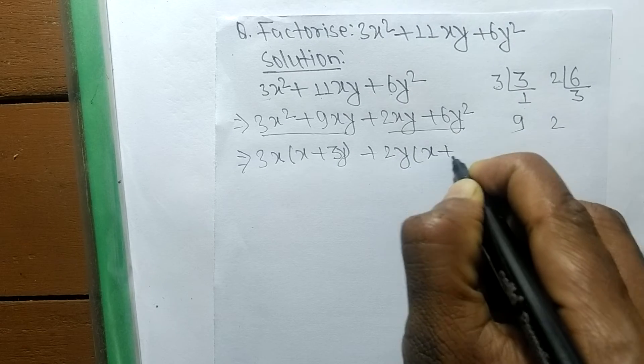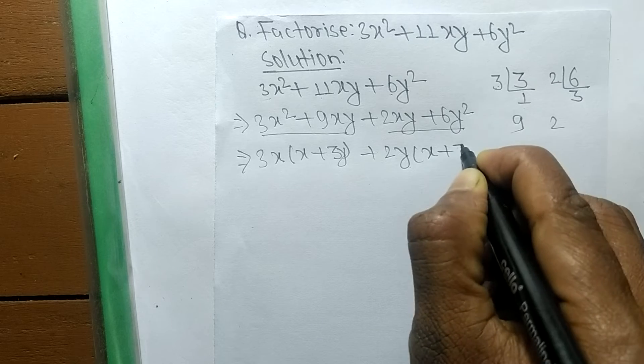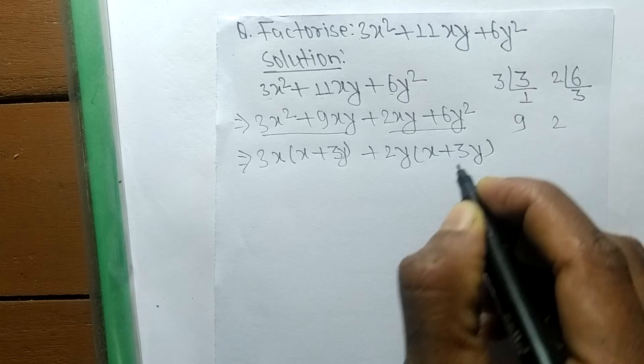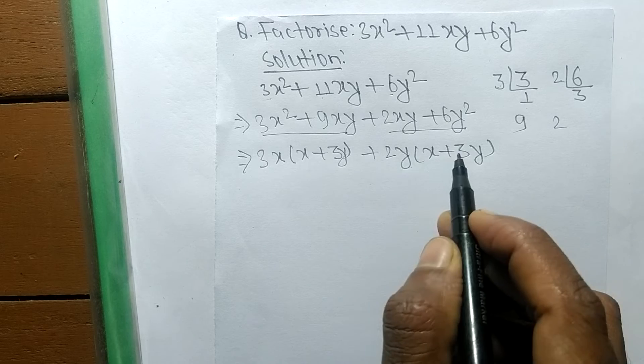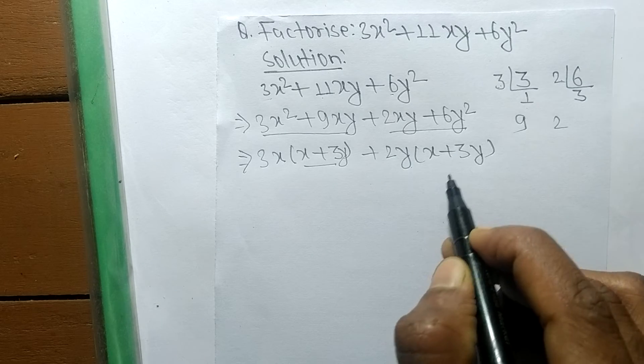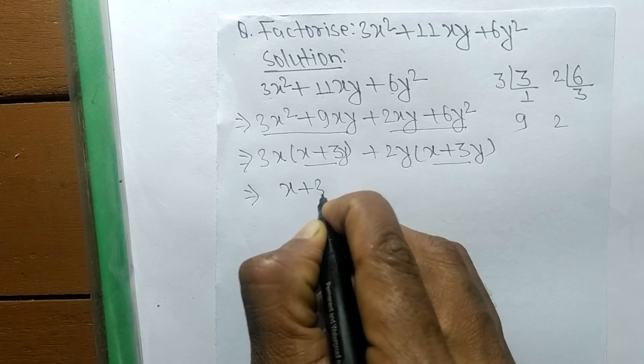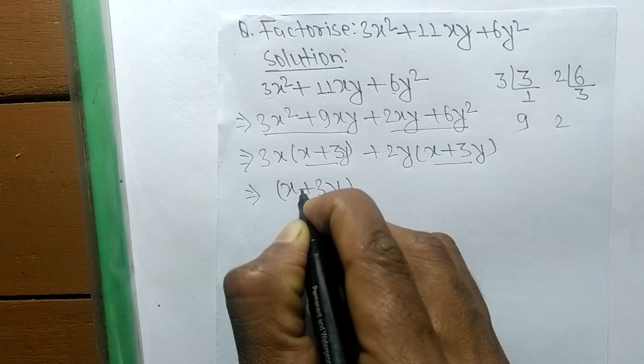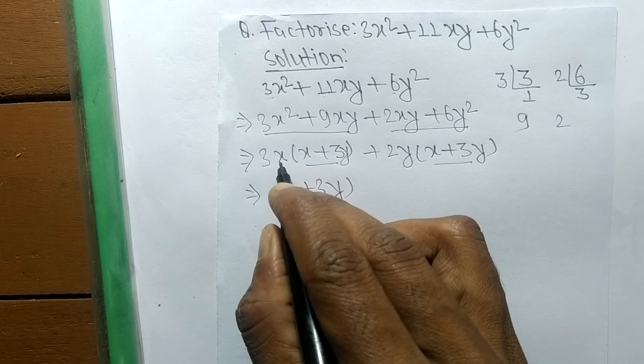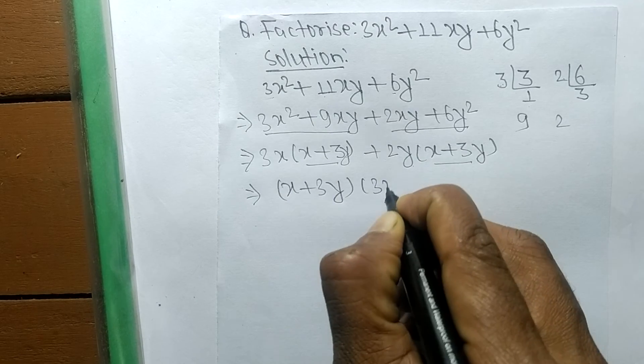Both pairs contain x + 3y. So the common part is x + 3y. The remaining in the first expression is 3x, and in the second one the remaining is 2y.